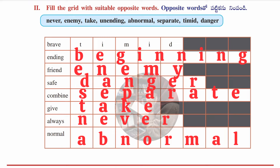The second section of worksheet 4.6: fill the grid with suitable opposite words using answers from the box. Answers: brave → timid; ending → beginning; friend → enemy; safe → danger; combine → separate; give → take; always → never; normal → abnormal.